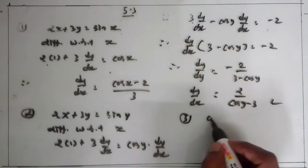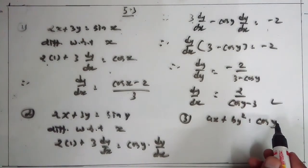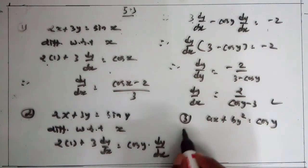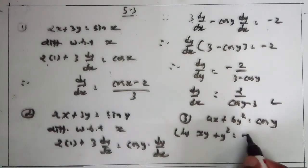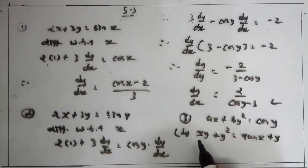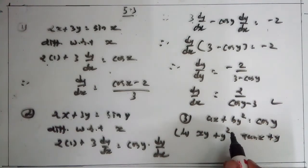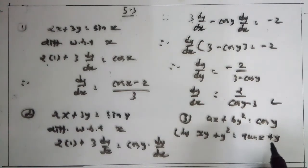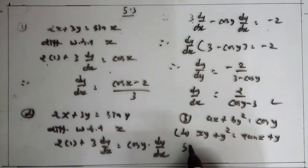Similarly in question 3: ax plus by squared equals cos y — get the derivative of each term with respect to x and isolate dy/dx. In question 4: x times y plus y squared equals 10x plus y. Differentiate each term with respect to x, applying the product rule to x times y: x times dy/dx plus y times 1 plus 2y dy/dx. The derivative of 10x is 10, and derivative of y is dy/dx. Collect dy/dx terms and isolate.